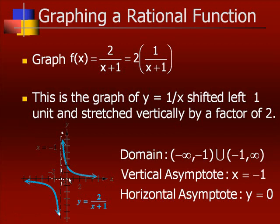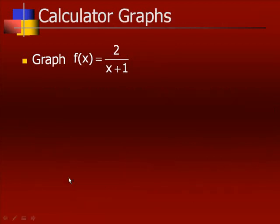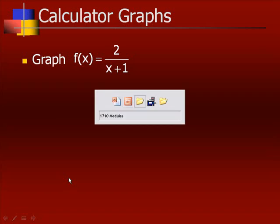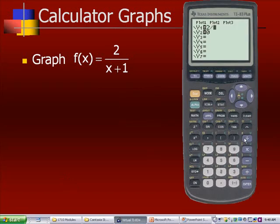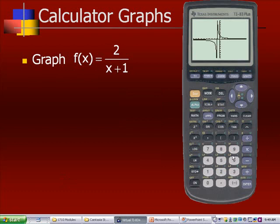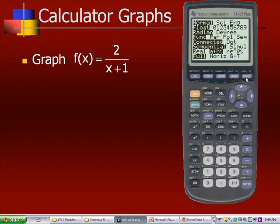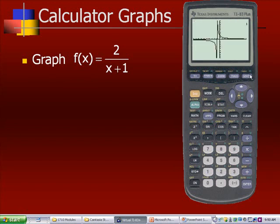The domain in this case would be from negative infinity to negative one, union with negative one to infinity. The vertical asymptote becomes x equals negative one — that's the point that makes it undefined — and the horizontal asymptote remains y equals zero. On the calculator, we enter y equals 2 divided by (x + 1), using parentheses for fractions. Going to zoom 6, that's what our graph looks like. Note we're in connected mode, so it connects the lowest value with the upper value — that vertical line is technically not part of the original graph.